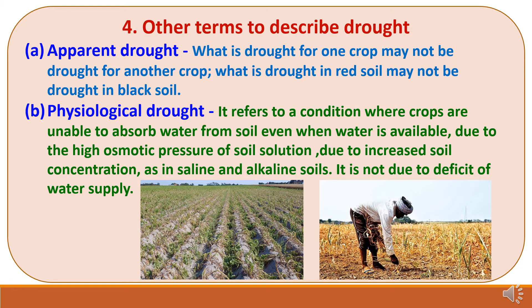The fourth classification covers other terms used to describe drought. First is apparent drought: what is drought for one crop may not be drought for another crop; what is drought in red soils may not be drought in black soils. This term represents the different factors responsible for drought in relation to different crops or situations. Second is physiological drought, which refers to a condition where crops are unable to absorb water from soil even when water is available, due to high osmotic pressure of the soil solution and increased soil concentration, as in saline and alkali soils — not due to a deficit of water supply.